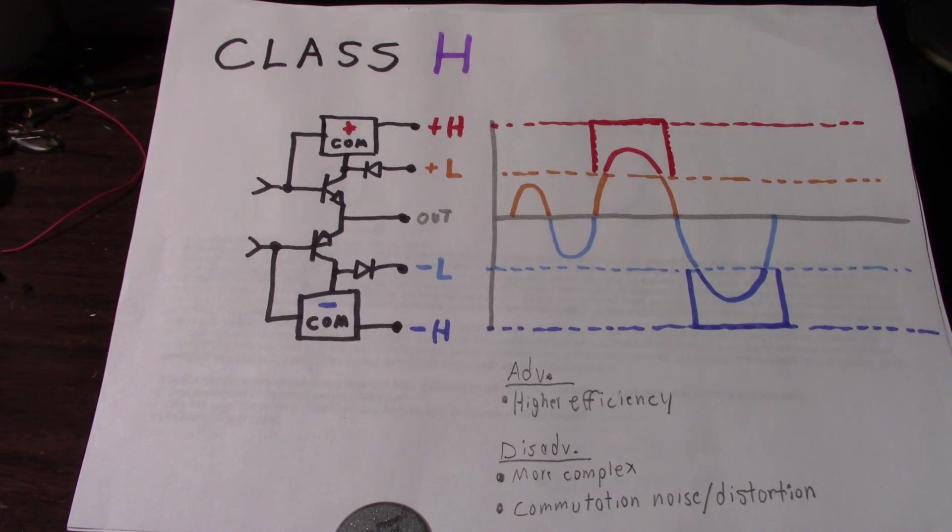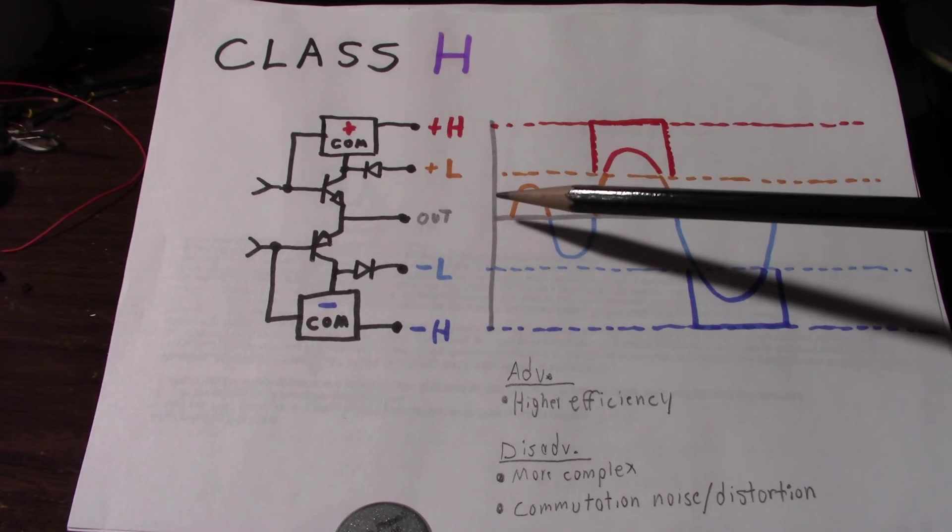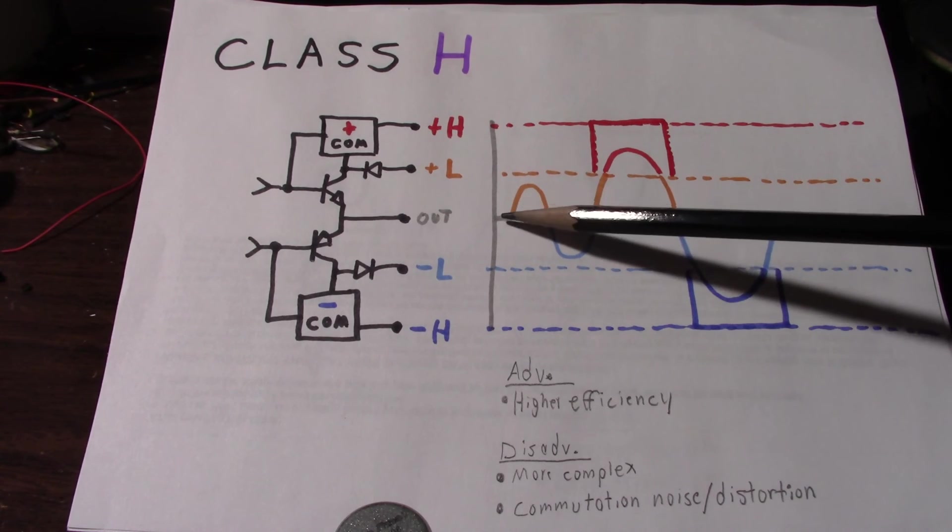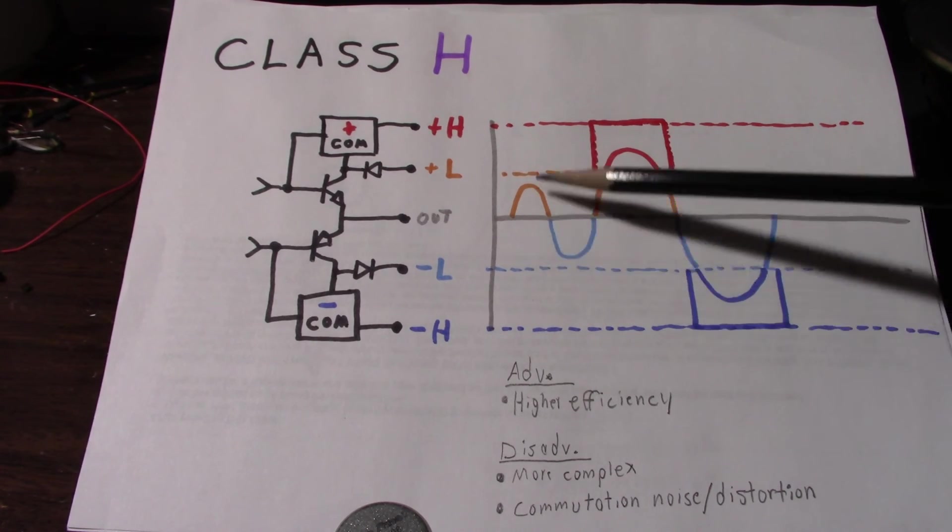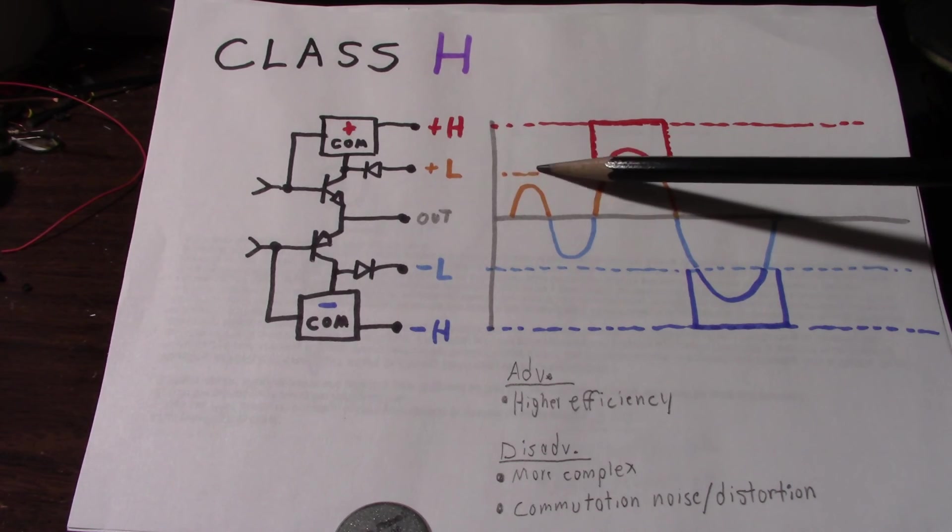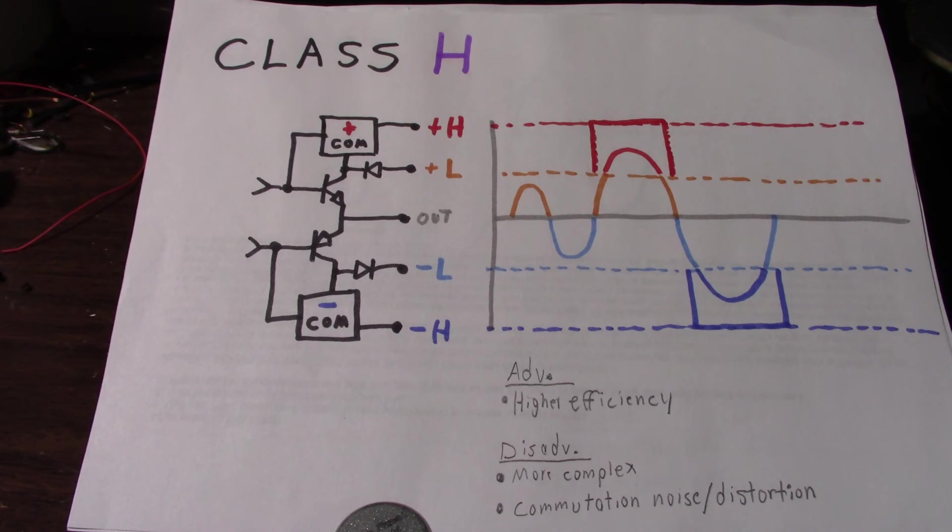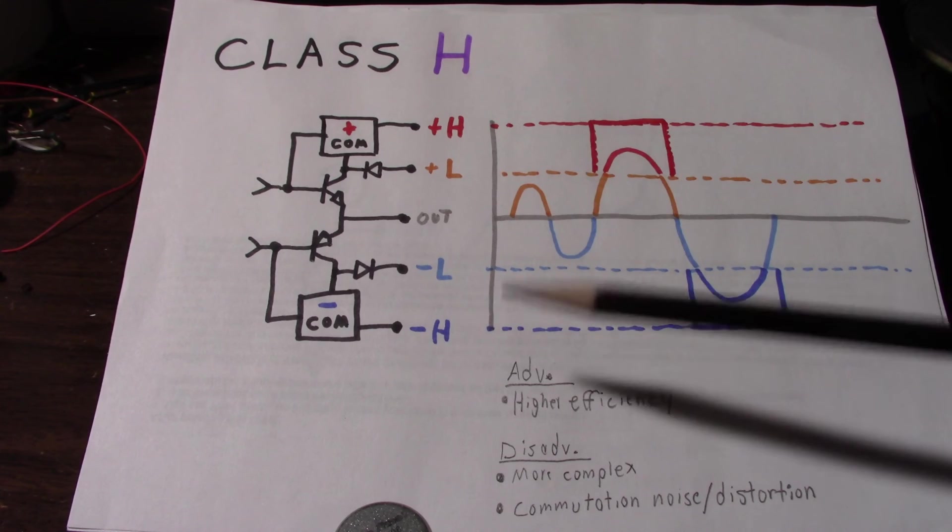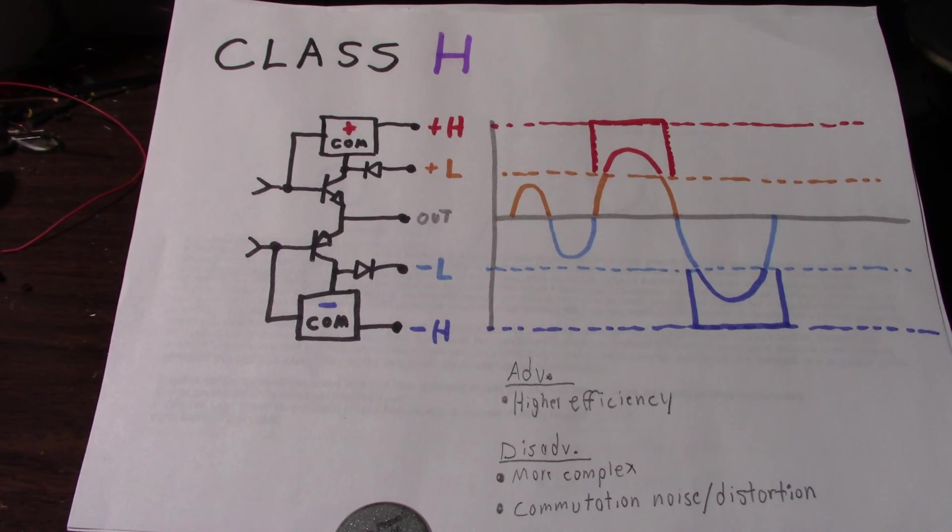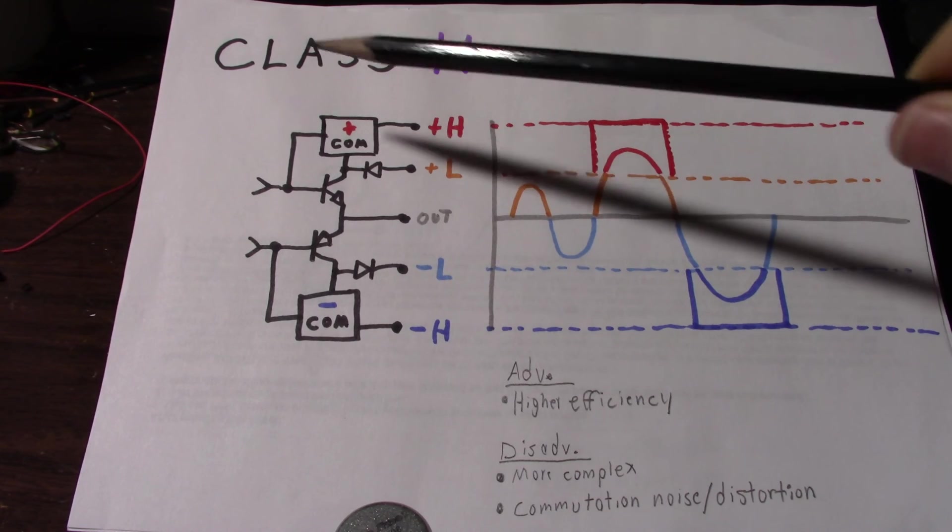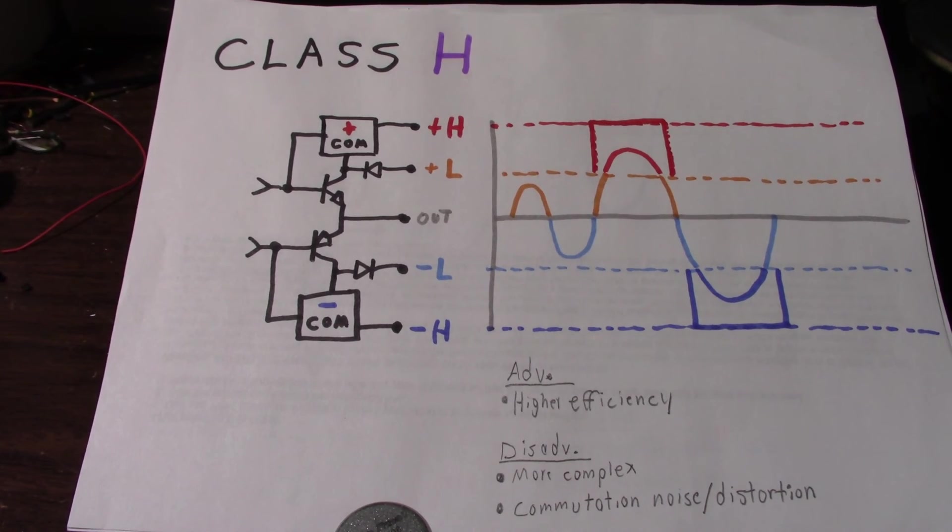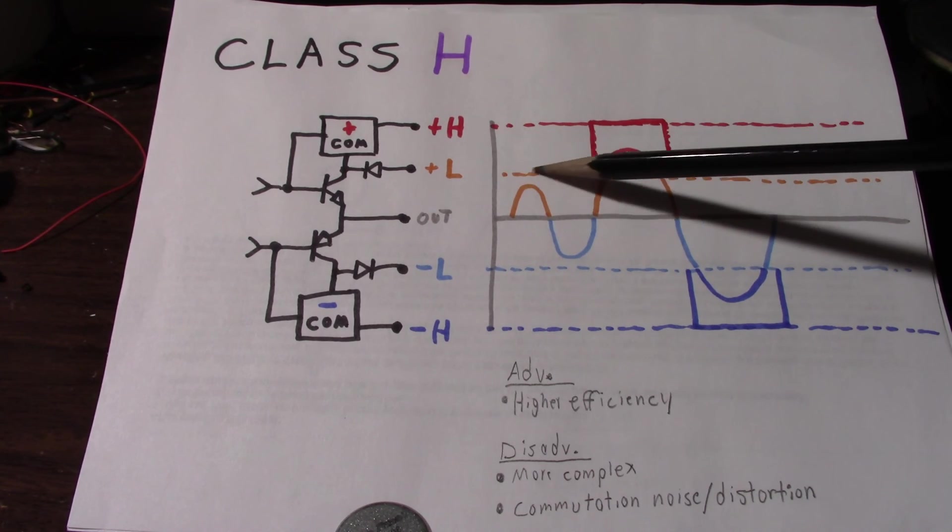So just as with the Class G, when the signal can work within the confines of the lower supply rails, there's a lower voltage drop across the transistors, and it dissipates less heat. So you can have a higher power amplifier and not dissipate nearly as much heat with normal program material. If you watched my video, I was examining a Carver car stereo amplifier that used the Class H principle. And I scoped one of the supply rails.